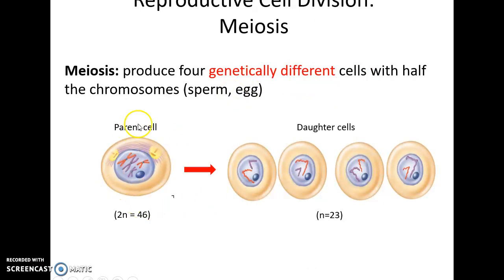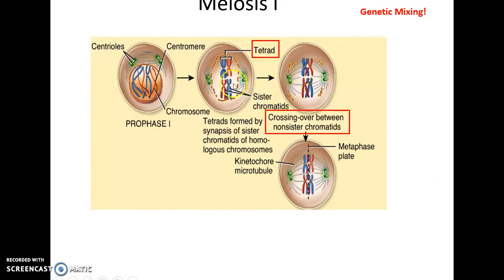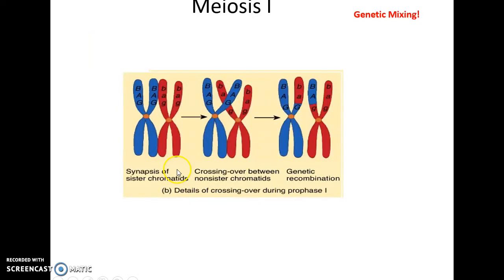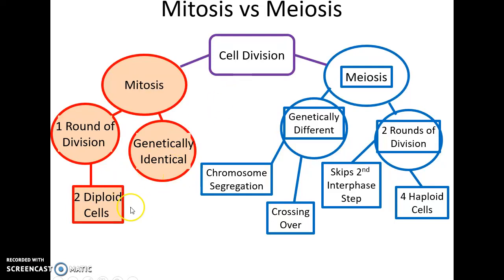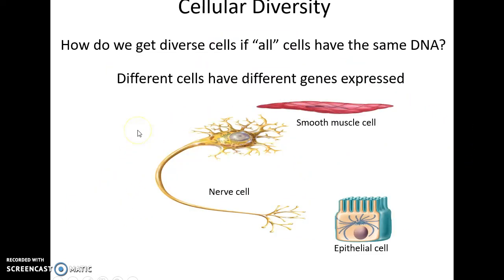Meiosis divides a cell into four new cells, each with only half the chromosomes — going from 46 chromosomes (23 pairs) down to 23 unpaired chromosomes. The four final cells are genetically different from the parent and from each other, producing egg cells (oocytes) and sperm cells. Meiosis also mixes DNA through crossing over, where chromosomes split and share portions, and through chromosome segregation, where maternal and paternal chromosomes go to different cells — giving us four distinct haploid cells with genetic diversity. All of our different cells have the same DNA but express different genes, such as nerve cells expressing nerve proteins and smooth muscle cells expressing smooth muscle proteins.